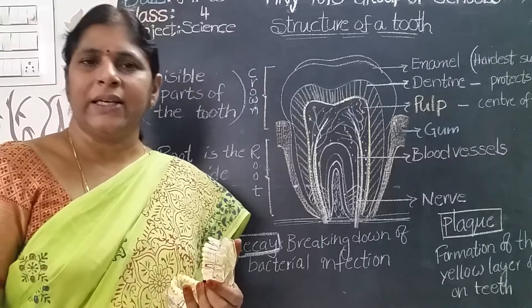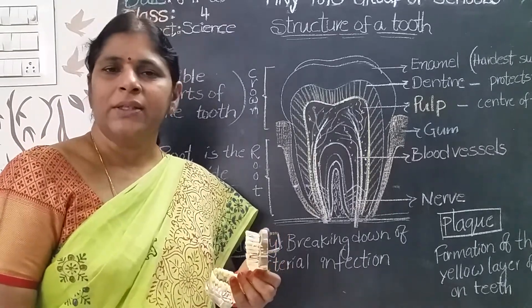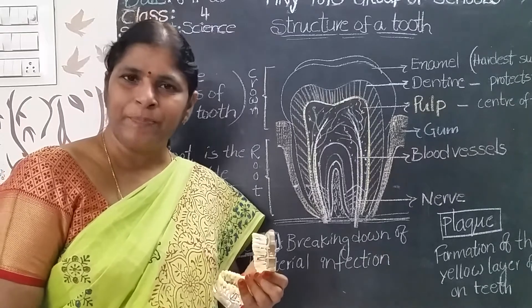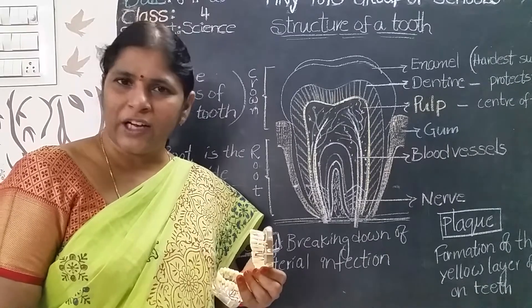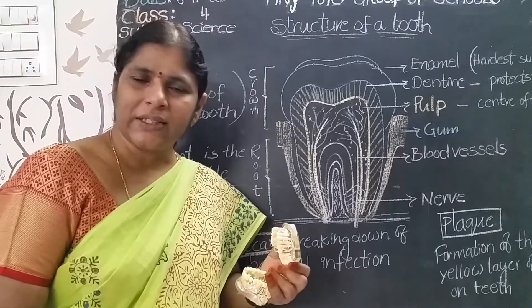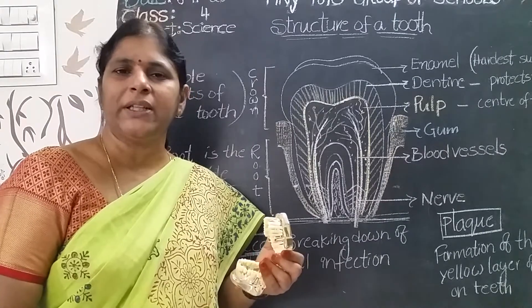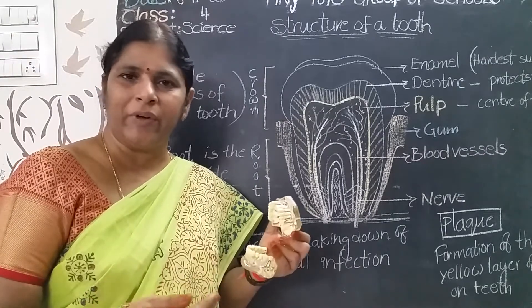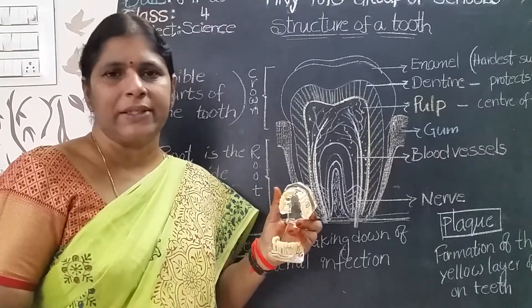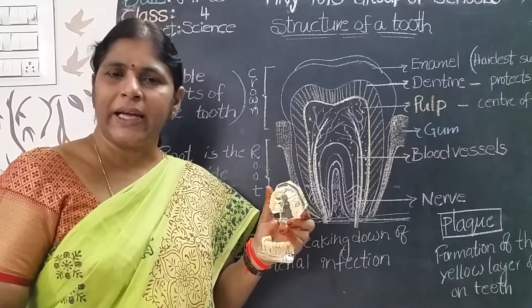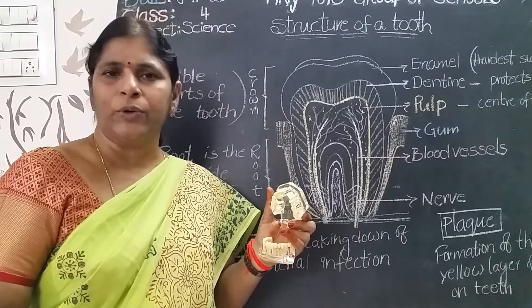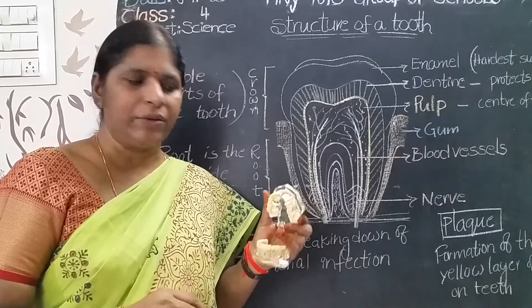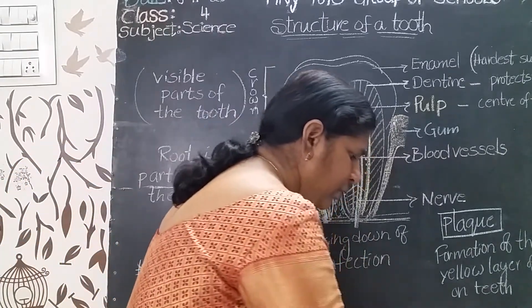Today we will learn about the structure of the tooth. Yesterday we discussed the four kinds of teeth. Humans have mainly two sets of teeth: milk teeth and permanent teeth, also called temporary teeth. At the age of two or three years, a baby has 20 primary teeth. At the age of five or six years, milk teeth start falling one by one, and in their place 32 permanent teeth appear. If we lose a permanent tooth, no new tooth will grow in that place — the doctor will arrange an artificial tooth.